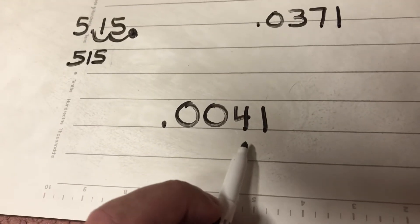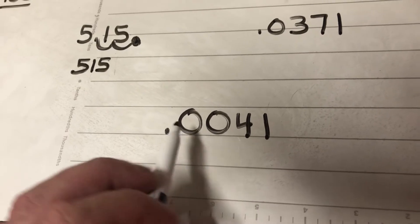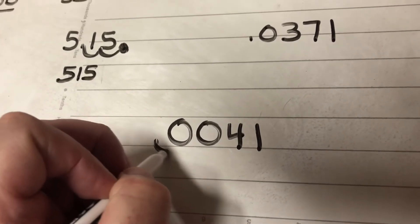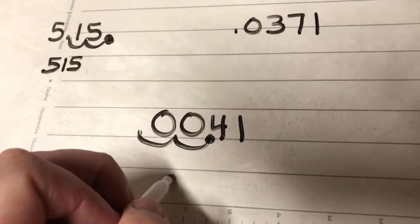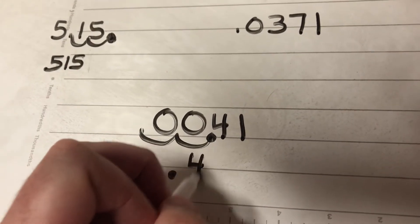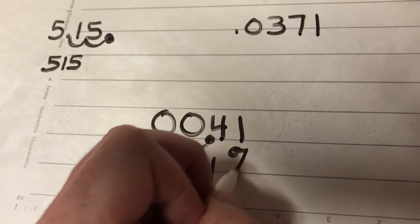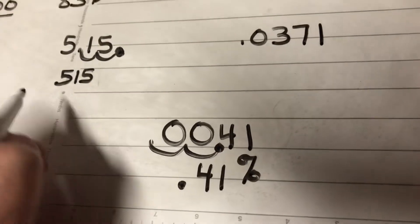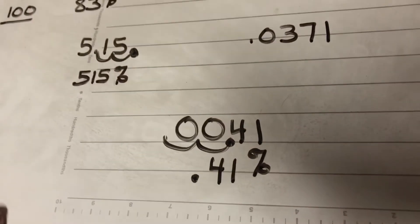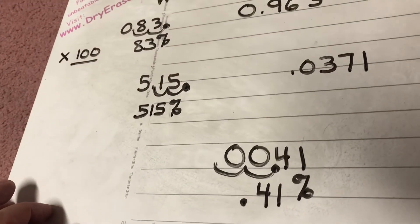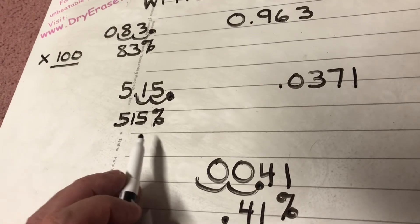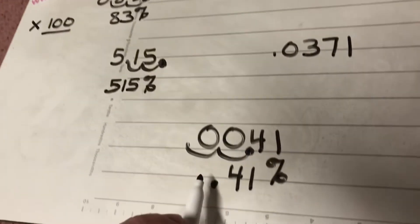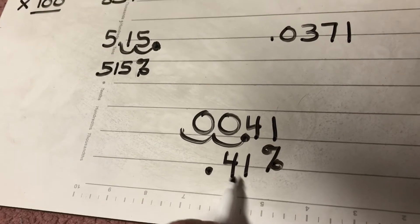Here I have 41 ten-thousandths. I'm going to multiply it by a hundred and move the decimal twice to the right. I end up with 0.41 — forty-one hundredths of a percent. Remember to always put the percent sign. 83 and 83% are not the same thing; 515 and 515% are not the same thing; 41 hundredths and 41 hundredths of a percent are not the same thing.